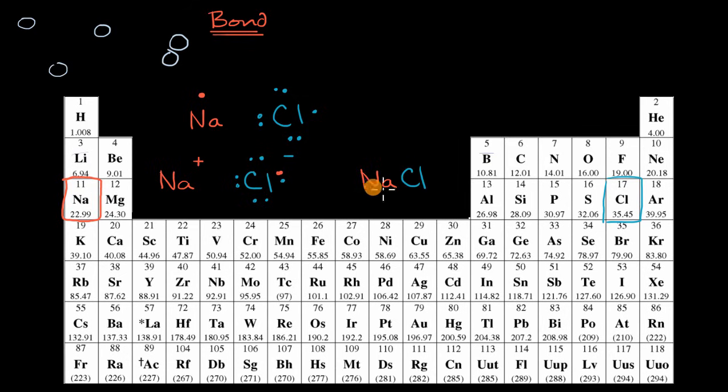And they will form a compound of sodium chloride. And notice, the whole compound here is neutral. It has a plus one charge for the sodium, a negative one charge for the chloride. But taken together, it is neutral because these are hanging out together. And this type of bond between ions, you might guess what it's called. It is called an ionic bond. Ionic bond.